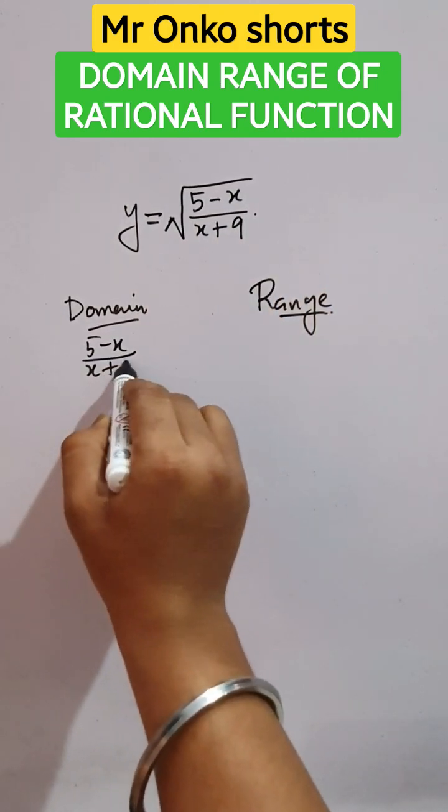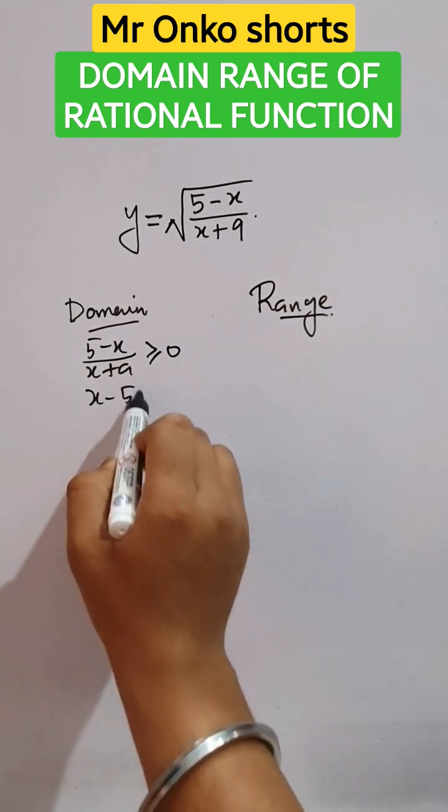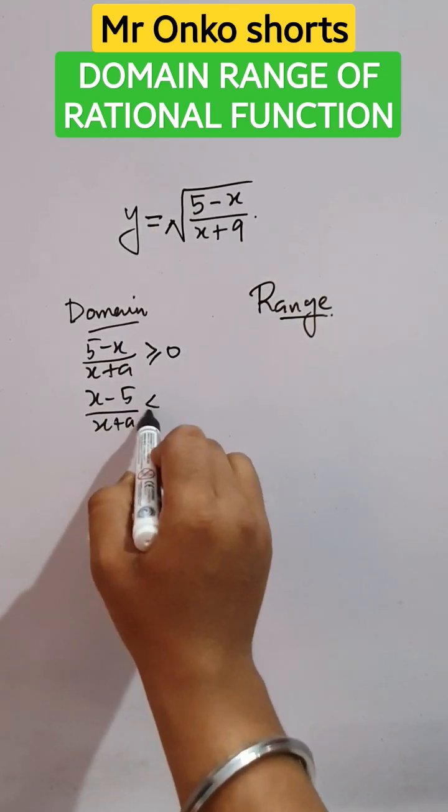So the term under square root must be greater than or equal to zero. If we take minus one common, the sign will be reversed.